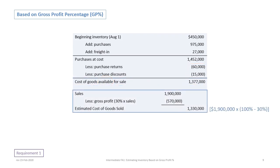Our next step is to estimate cost of goods sold based on our sales. The data says the company had $1,900,000 in sales and the average gross profit is 30% of sales. So if we deduct 30%, that's $570,000, we end up with an estimated cost of goods sold of $1,330,000. You can bypass this and simply calculate $1,900,000 times (100% minus 30%), giving a 70% cost of goods sold ratio — which is the same result.